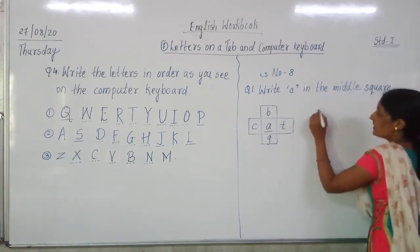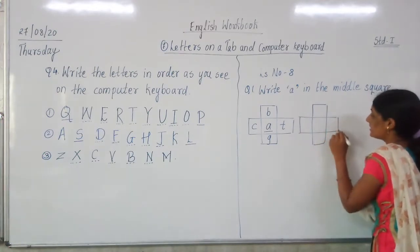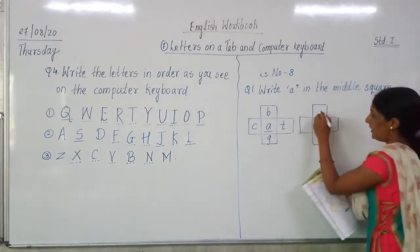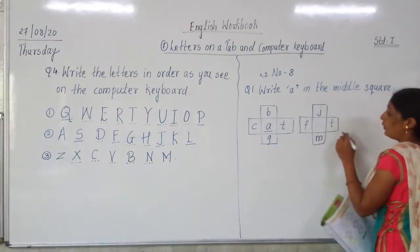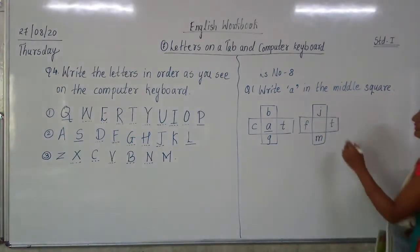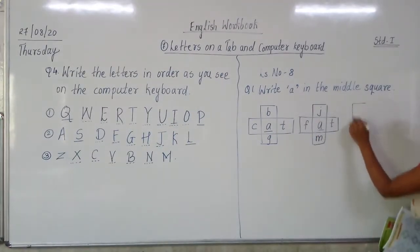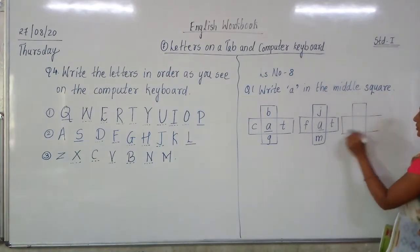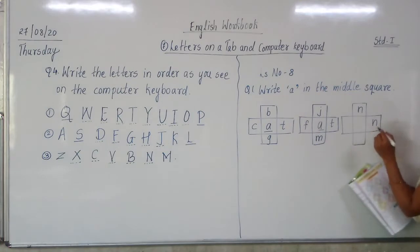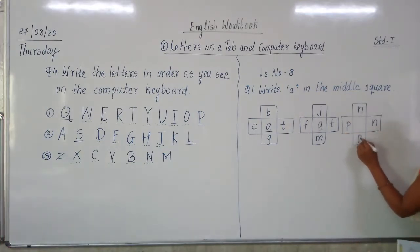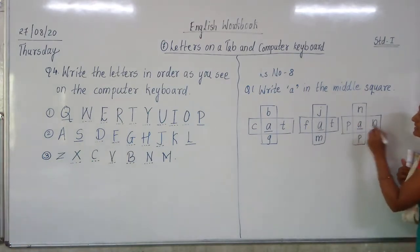The second box has the letters J, P, F, M. We have to write down the letter A in the middle. The next example has letters N, P, N, P. We have to write down the letter A in the middle square.